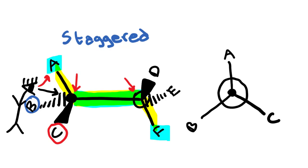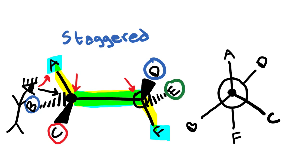Now let's look at the back carbon. Letter F is pointing straight down because it's in the same plane as cyclops man — just in the plane of the computer screen. If we look at letter D, it is on a wedge, meaning it's in front of the screen. So if cyclops man is facing to the right and wants to grab letter D, he's going to reach up and to his right. Meanwhile, letter E is behind the computer screen, so if he wants to reach letter E, it's up and to his left.